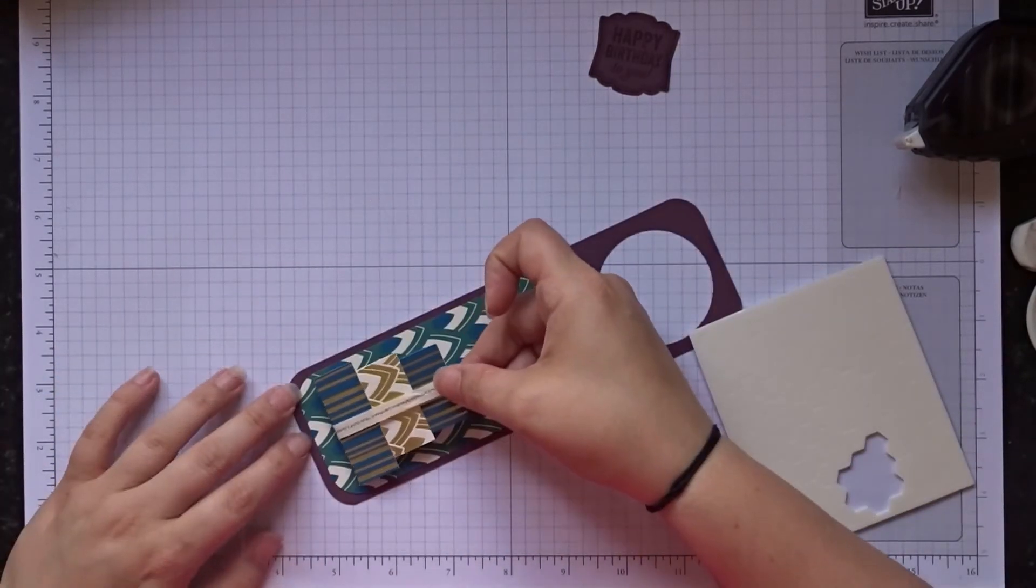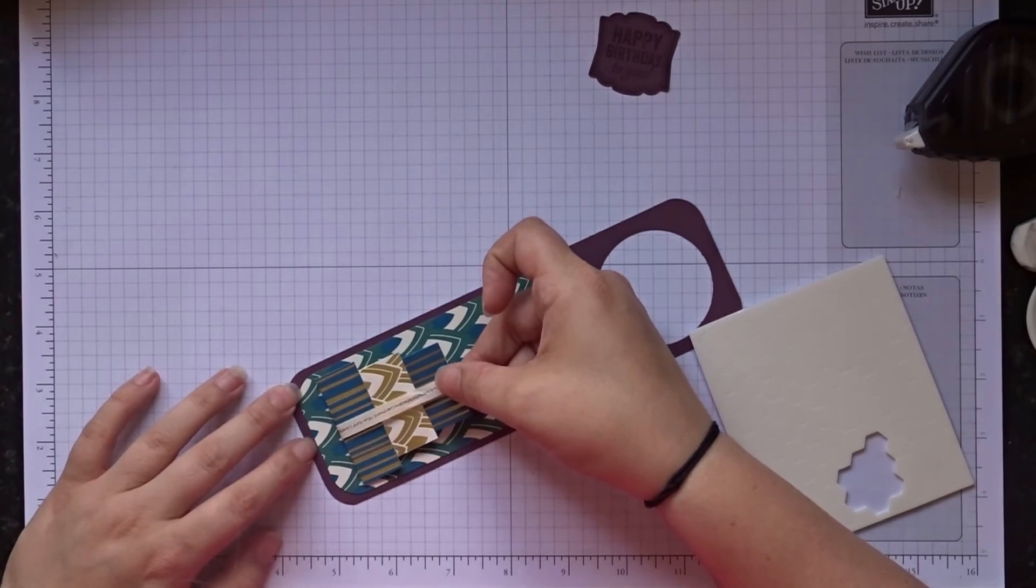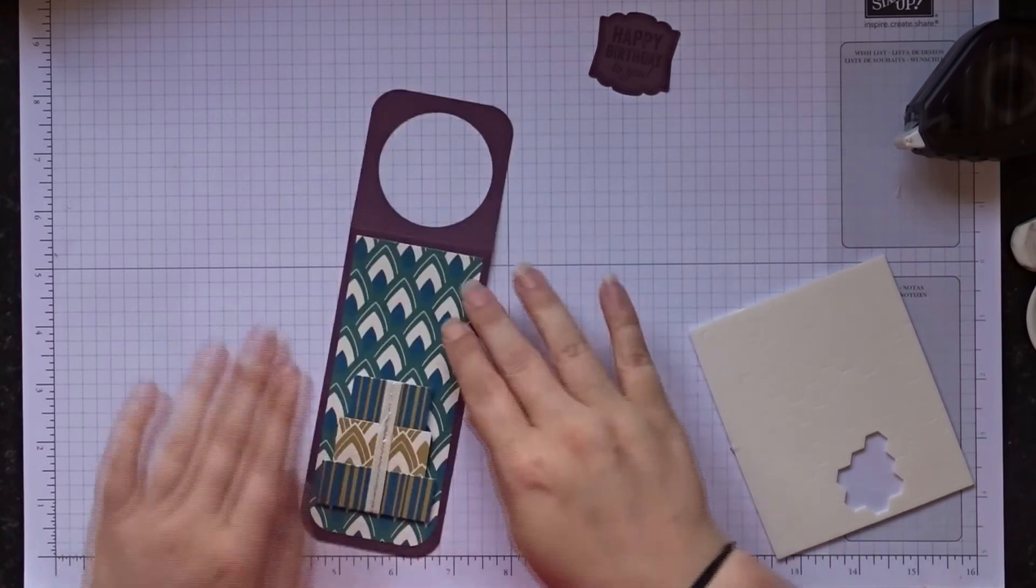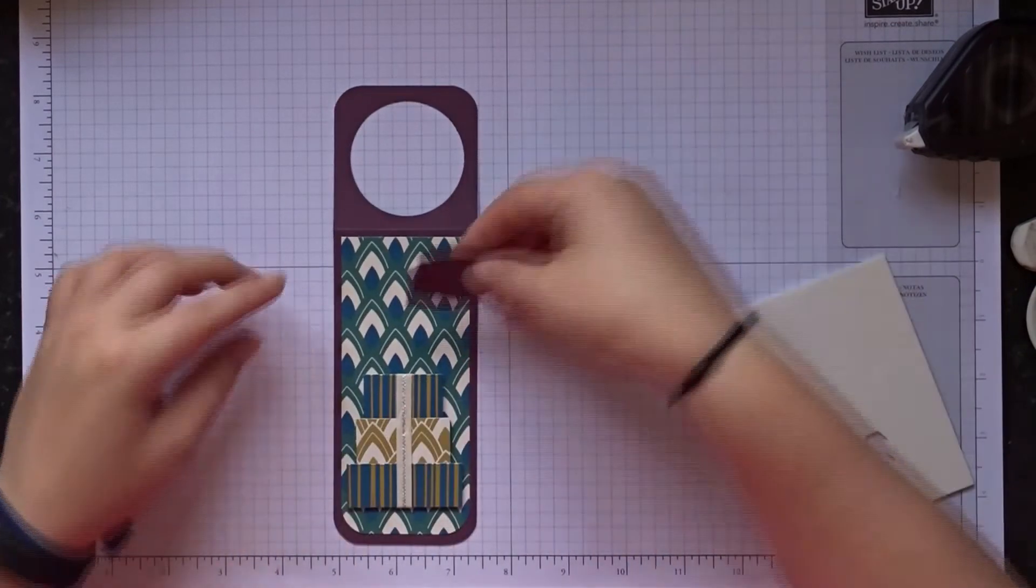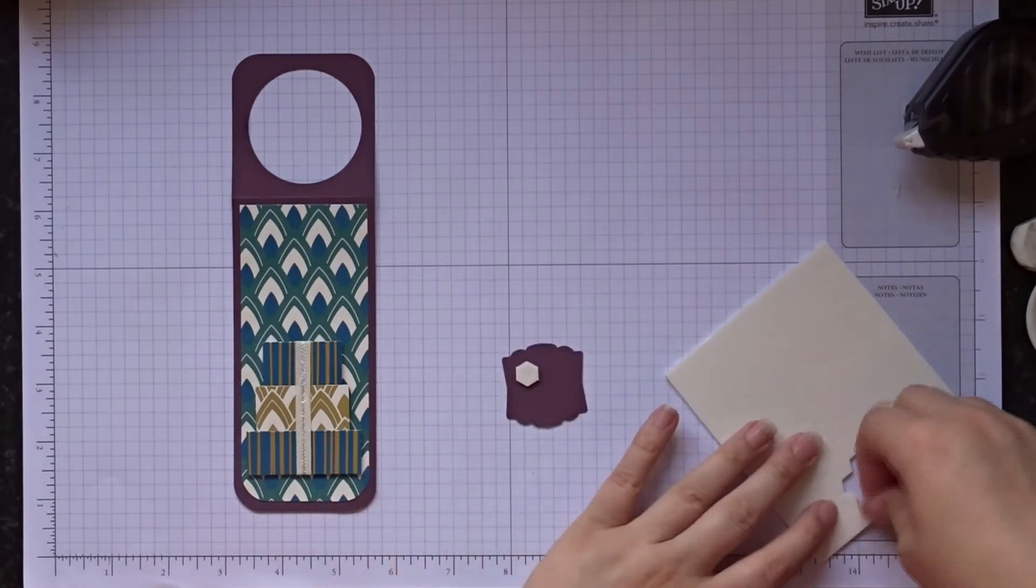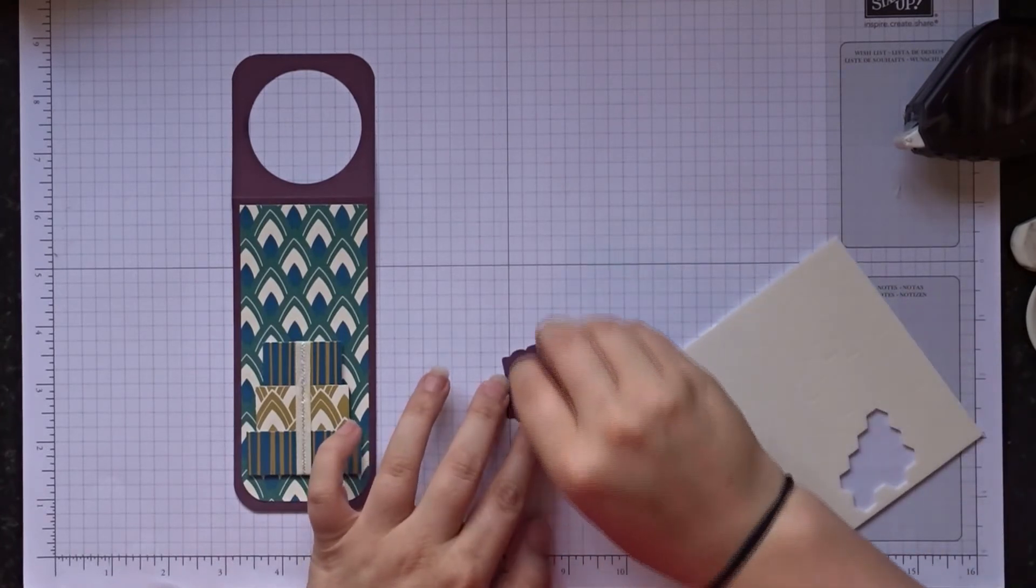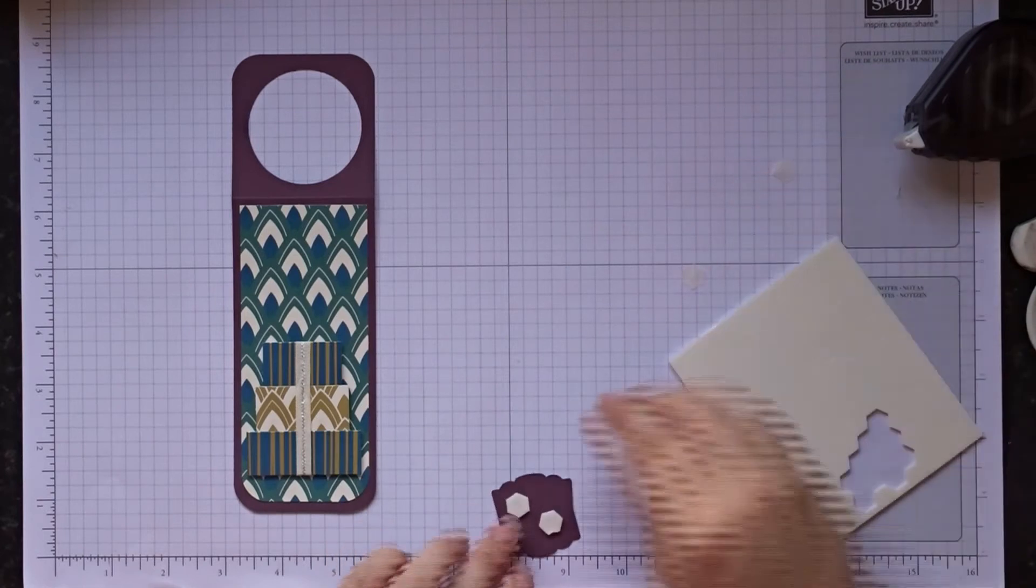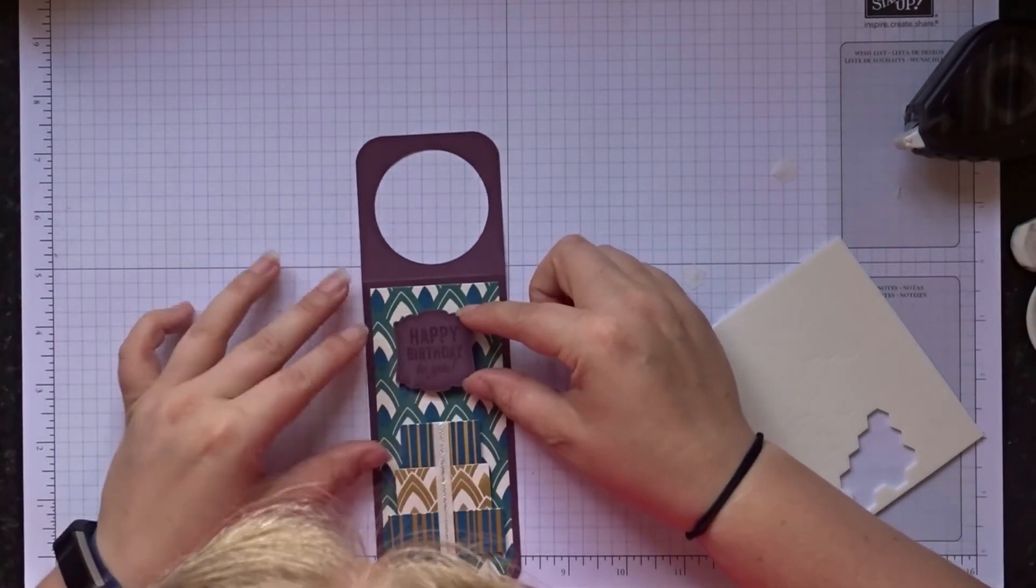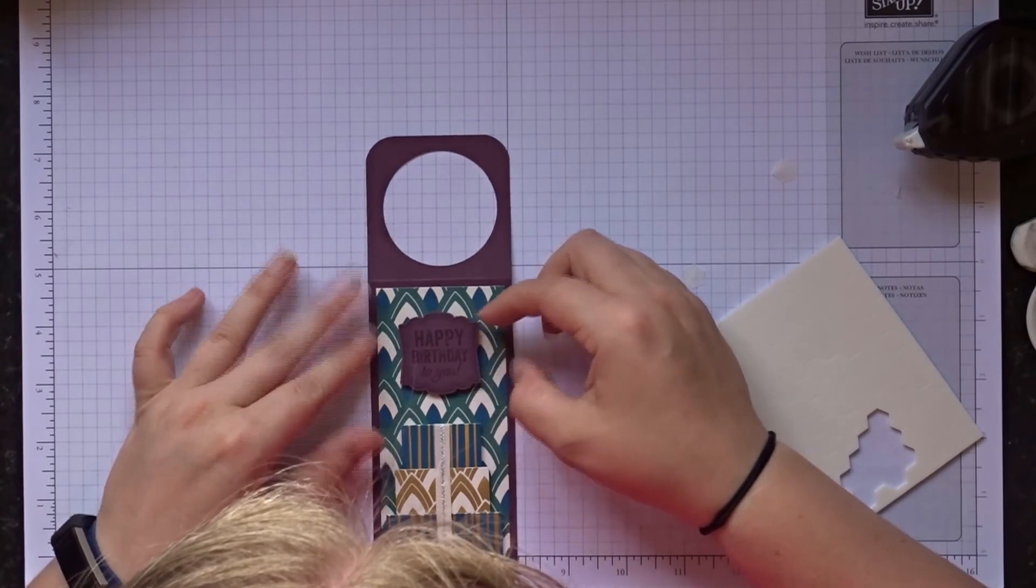Right, so all you're going to do is line up where you'd like your cake to be. So I think I want mine there. And just slowly push them down. Okay, so then we've got this lovely happy birthday label and again dimensionals. And line up where you want this to be.